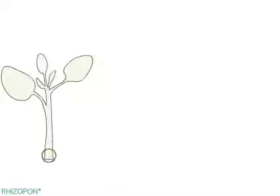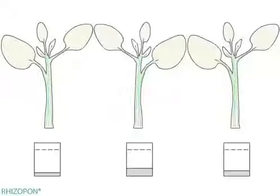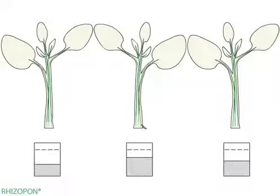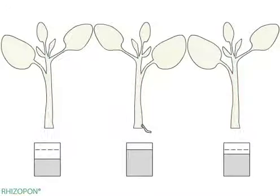Usually, natural auxin production in the cuttings is not sufficient. Only occasional roots may form. Some cuttings may have delayed rooting or may not form any roots.